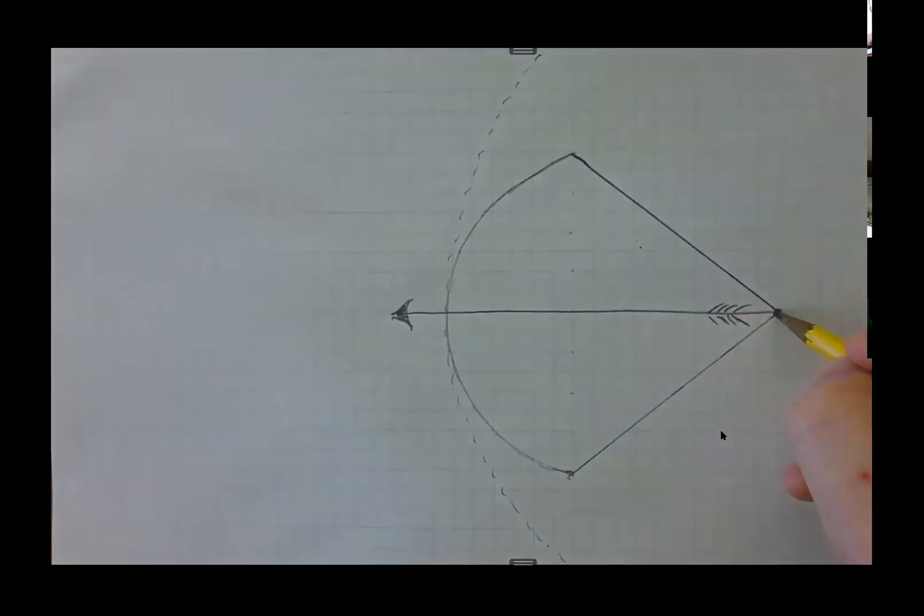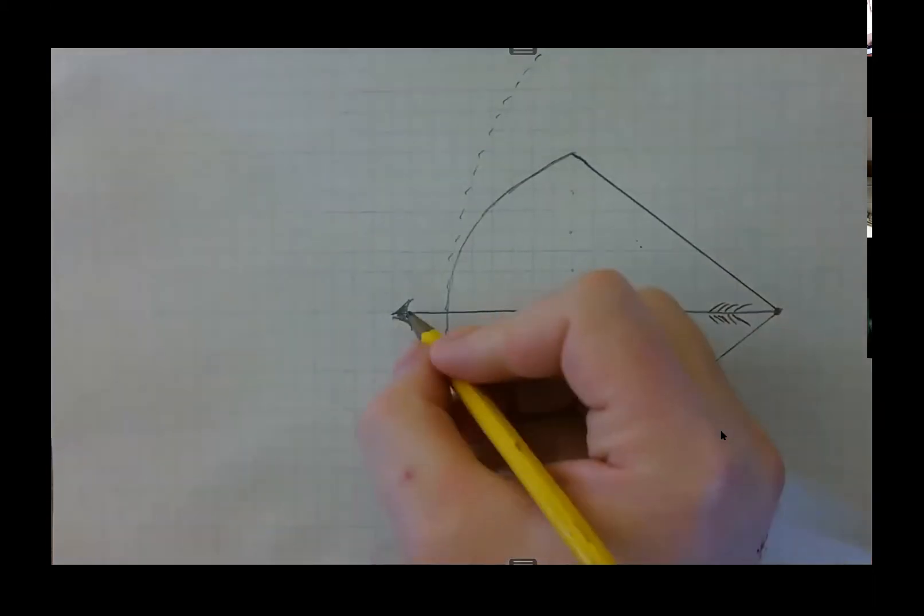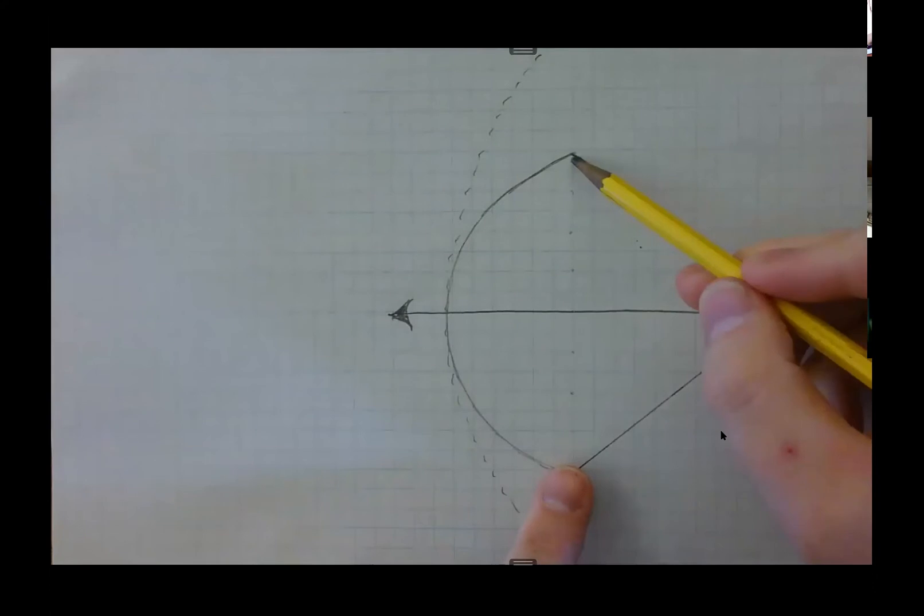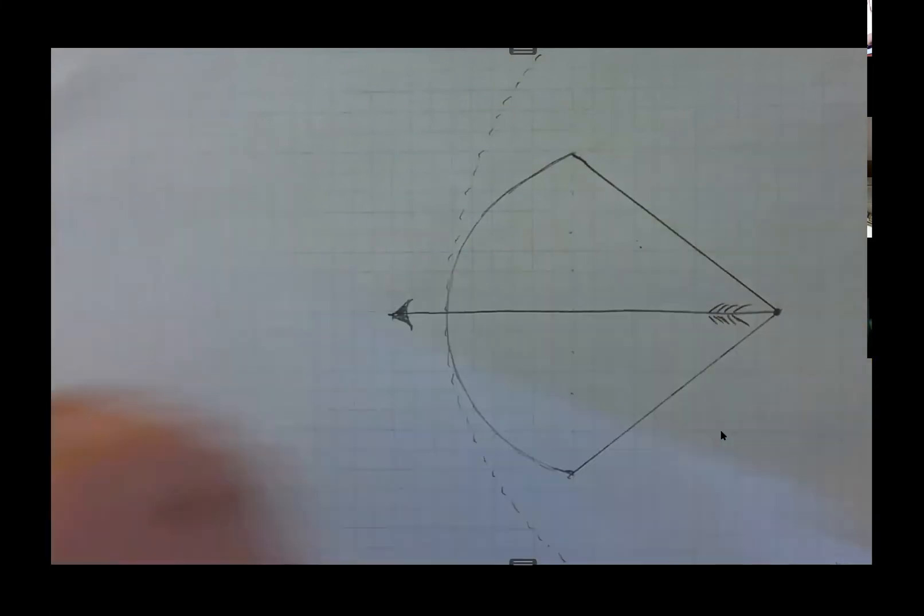And when you release or loose the arrow, when you loose, which means to release the bow string and let the arrow fly, it lets all this potential energy stored in the stretched bow, turns it into kinetic energy, which drives that arrow forward.